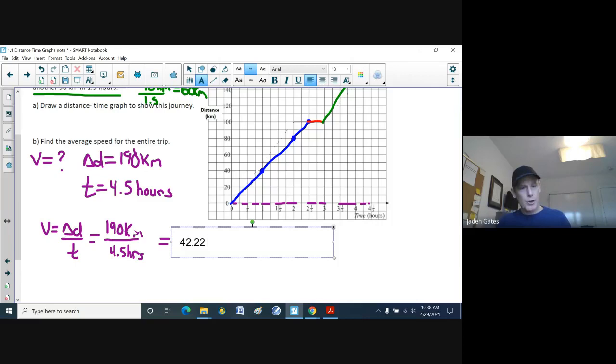And if I look at the units, kilometers are on the top, hours are on the bottom. Division means per, so we have kilometers per hour. Here we go. Kind of drives like my grandmother.